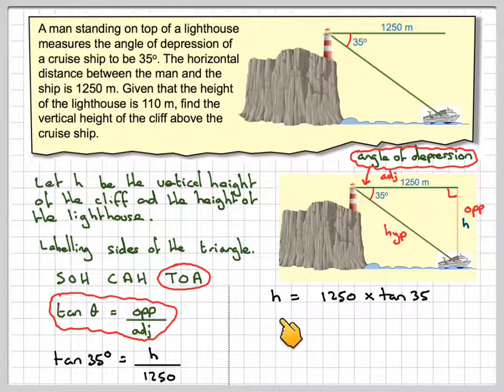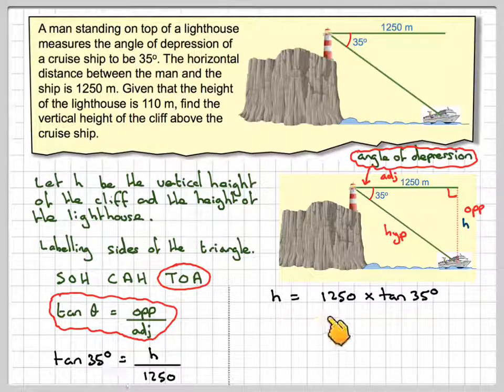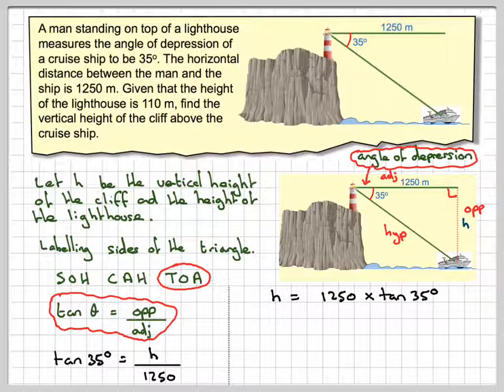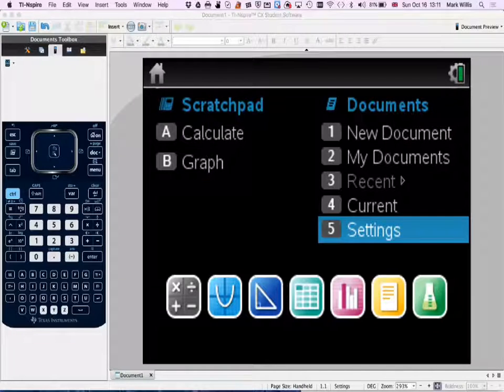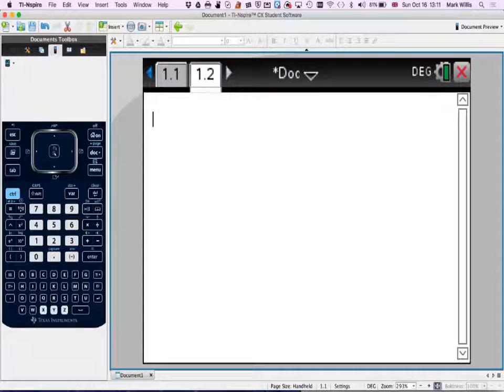And therefore, to find h, we'd have to multiply 1250 by tan 35 degrees. Go into our calculator to do that, and make sure in settings that we've already put our calculator into degrees. Go to here. We can check that our calculator is in degrees by just looking at this sign here.